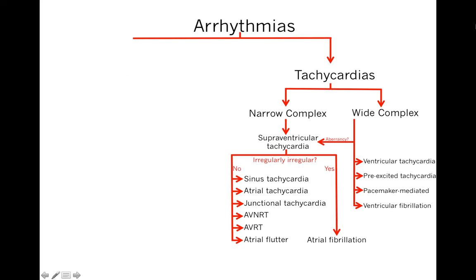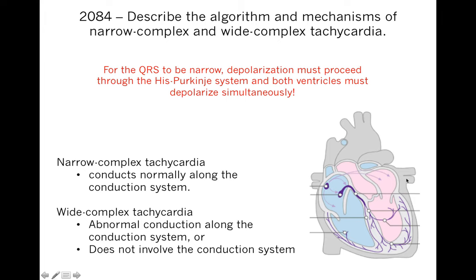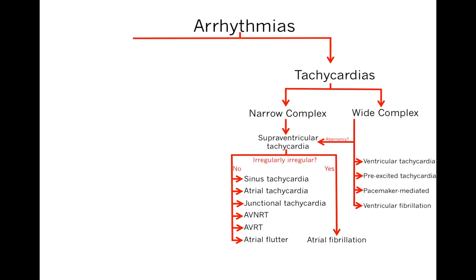If the tachycardia originates from the atria and goes through the His-Purkinje system with both ventricles contracting simultaneously, you will have a narrow complex tachycardia. If you have a rhythm originating from the ventricles, or from the atria with disease in the His-Purkinje system, you will have a wide complex tachycardia. This distinction matters clinically: narrow complex tachycardias are mostly non-emergent and can be treated medically, while wide complex tachycardia can sometimes be emergencies and lead to sudden death.